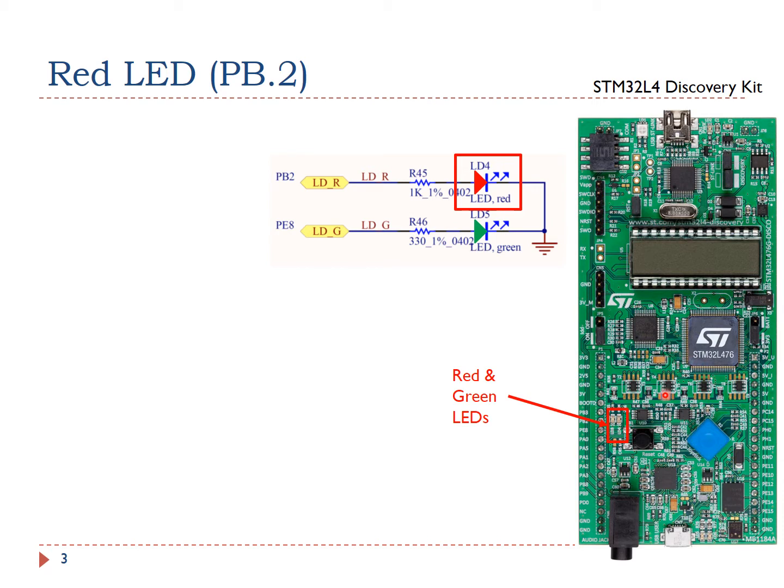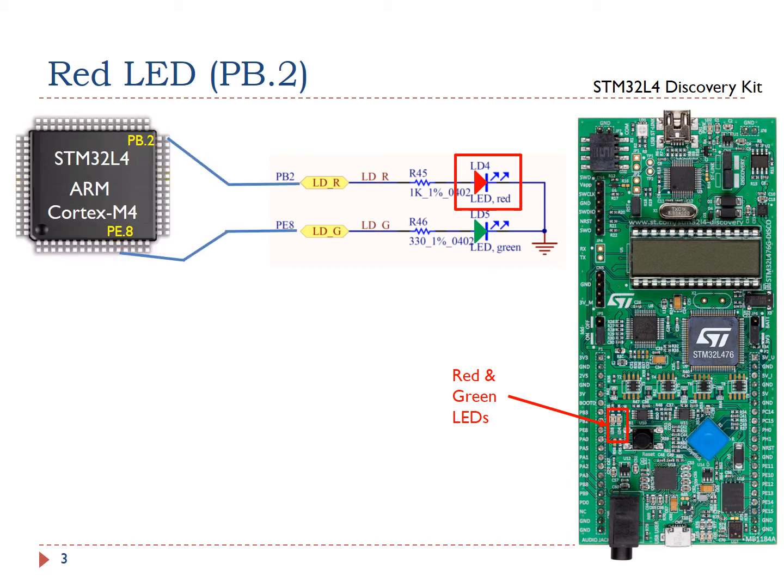This is the STM32L4 discovery kit. Software can control two LEDs on board, including one red LED and one green LED. The red LED is connected to the microprocessor pin PB2 via a resistor. The green LED is connected to the pin PE8 via another resistor.